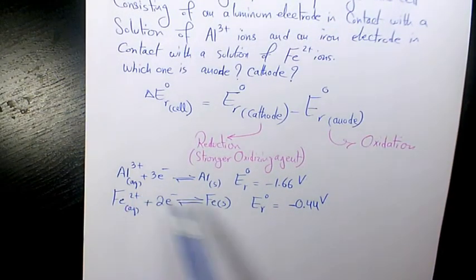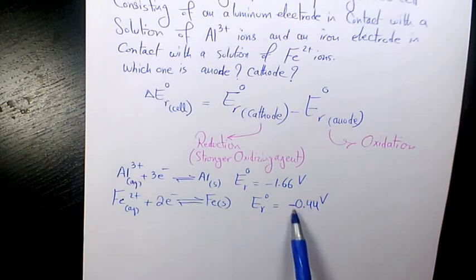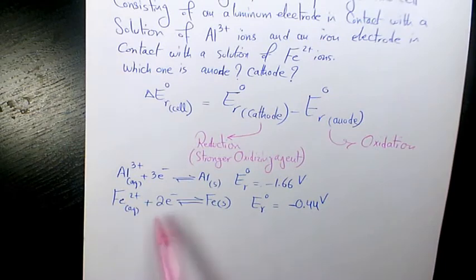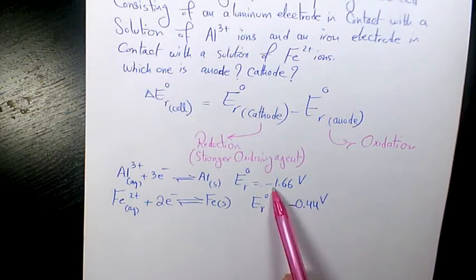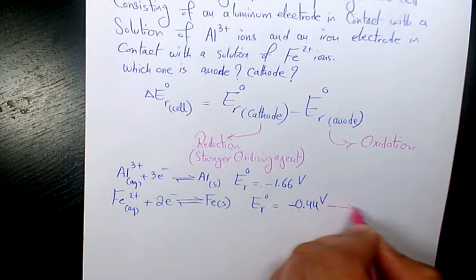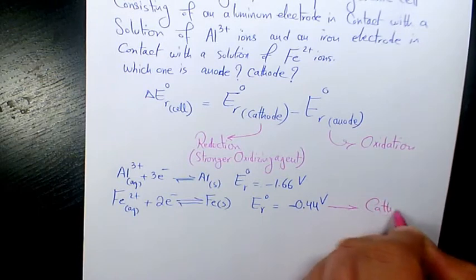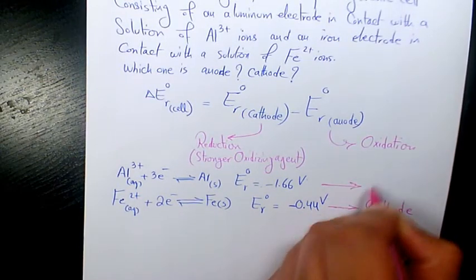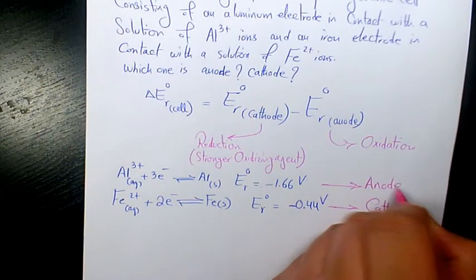So since the second one is greater than the first one, we can say this one, Fe, is a stronger oxidizing agent compared to aluminum because this number is greater than this number. So therefore, this one is the cathode and this one is going to be the anode.